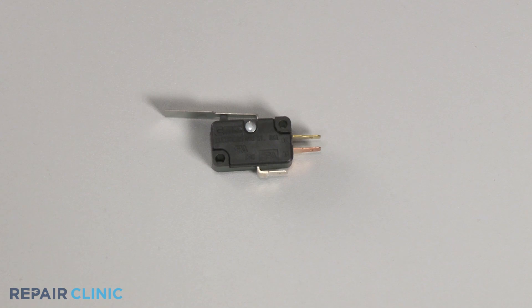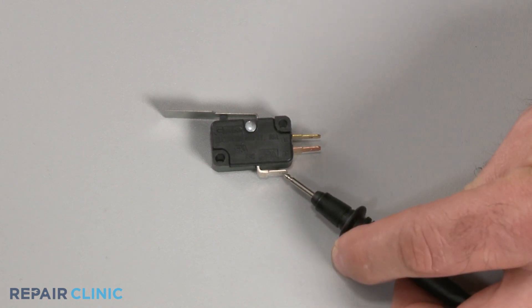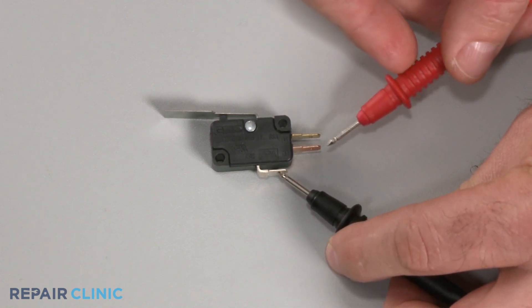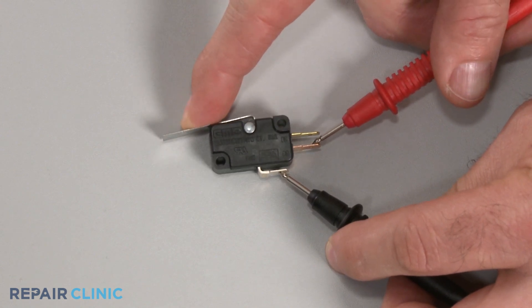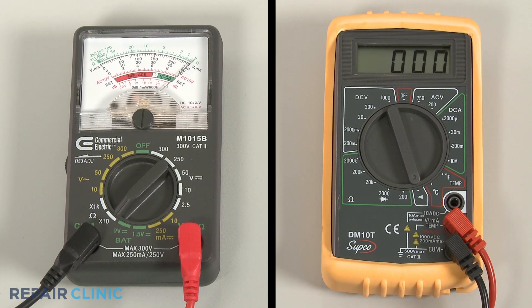To test the switch, use a probe to touch the common terminal and the second probe to touch the normally open terminal. Now actuate the switch. If the meter reading shows zero ohms of resistance, the switch has continuity.